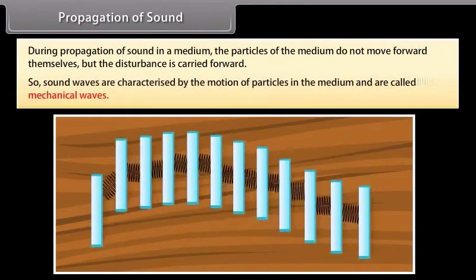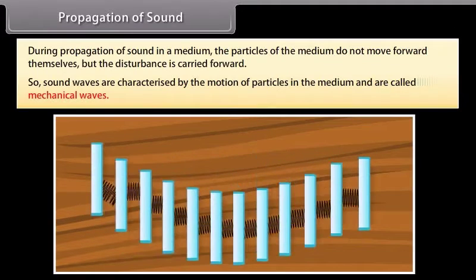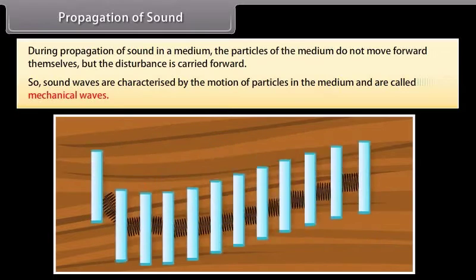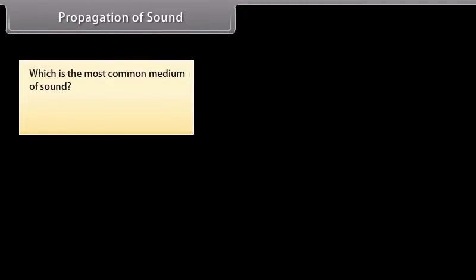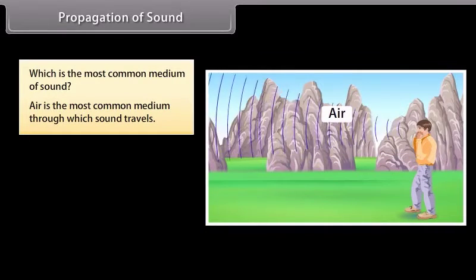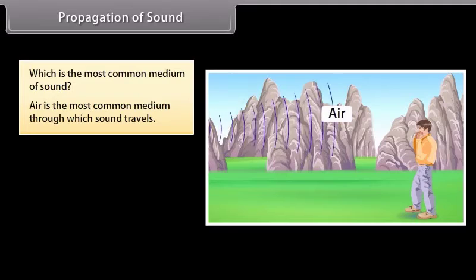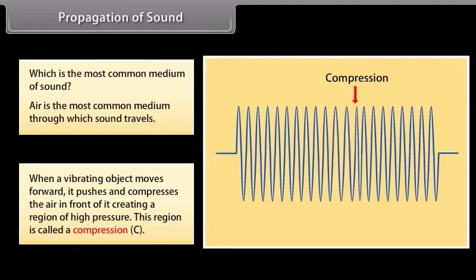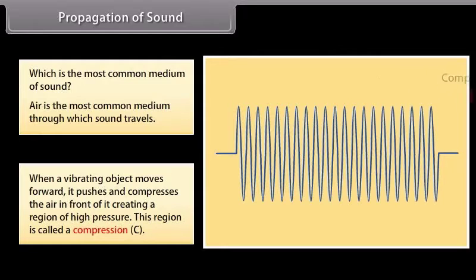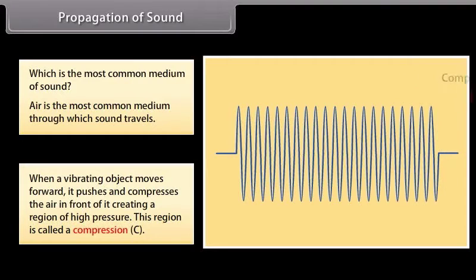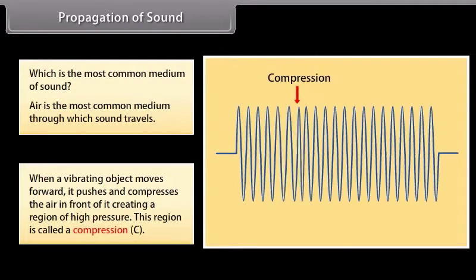During propagation of sound in a medium, the particles of the medium do not move forward themselves, but the disturbance is carried forward. So sound waves are characterized by the motion of particles in the medium and are called mechanical waves. Air is the most common medium through which sound travels. When a vibrating object moves forward, it pushes and compresses the air in front of it, creating a region of high pressure. This region is called a compression.